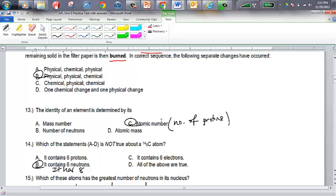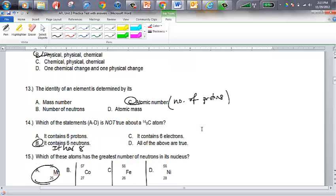Identity of an element is going to be determined by its number of protons, and the number of protons, of course, is the atomic number, so C is the right answer for number 13. The 14 over 6 carbon would not have 6 neutrons because it actually has 8. 14 minus 6 is 8.